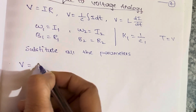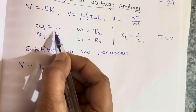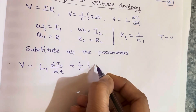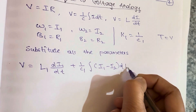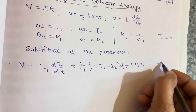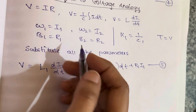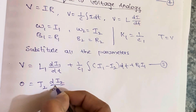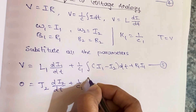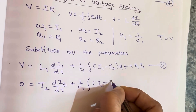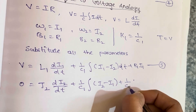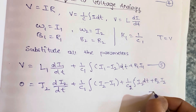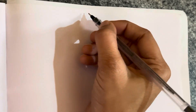Substituting into equation 3 (with J1 = L1): V equals L1·di1/dt plus (1/C1) times the integration of (i1 minus i2) dt plus R1·i1. This is equation number 5. Substituting into equation 4: 0 equals L2·di2/dt plus (1/C1) times the integration of (i2 minus i1) dt plus (1/C2) times the integration of i2 dt plus R2·i2. This is equation number 6.